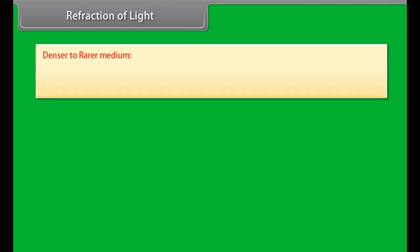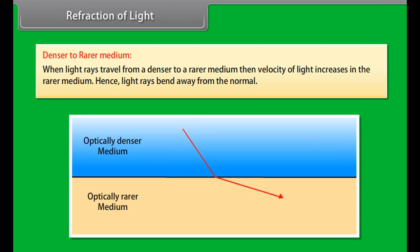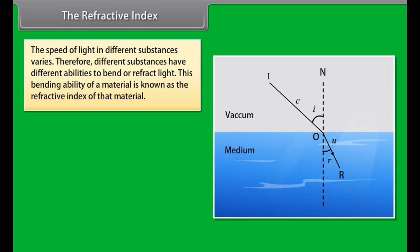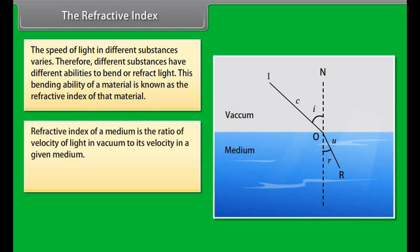When light travels from a denser to a rarer medium, the velocity of light increases and light rays bend away from the normal. The refractive index is the bending ability of a material. It is the ratio of the velocity of light in vacuum to its velocity in a given medium. The refractive index of a rarer medium is less compared to that of a denser medium.